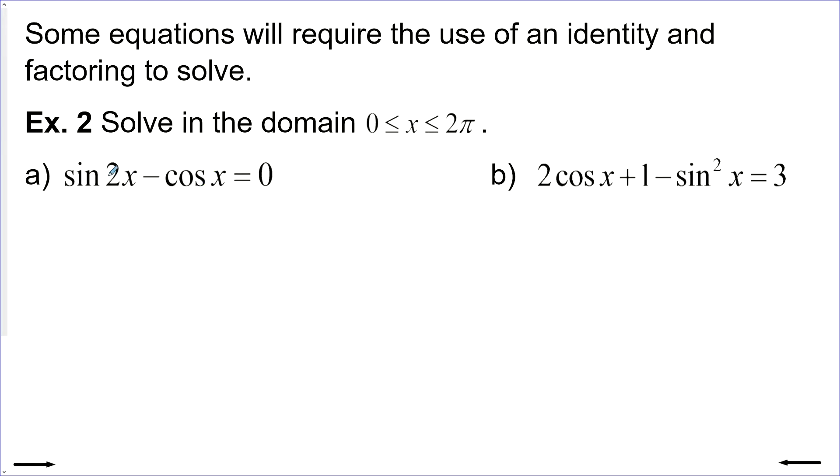Sine has a double angle identity. And so we can get rid of sine 2x. It is equal to 2 sine x times cos x. And once we sub out that double angle, we see that this term and this term have a common factor. It's cos x. So let's factor it out.